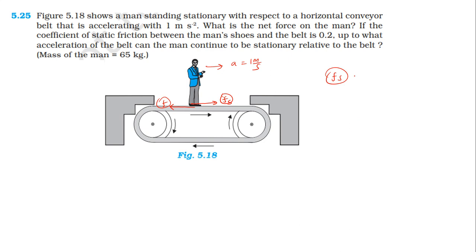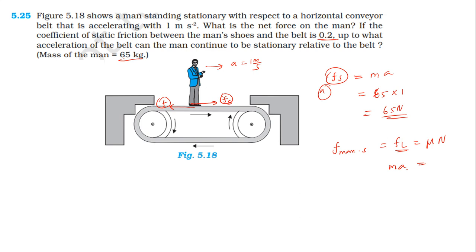The net force equals mass times acceleration. For the second part, with coefficient of static friction μ = 0.2: limiting friction equals μN = μmg. The maximum acceleration the man can sustain equals μg = 0.2 × 10 = 2 m/s². Beyond this acceleration, the man will slip relative to the belt.